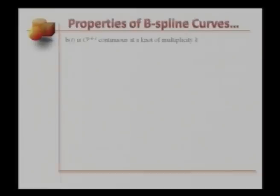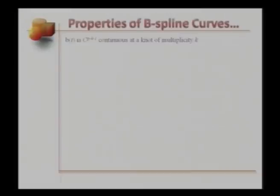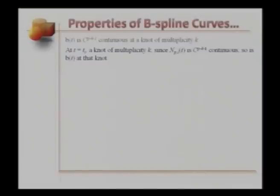A B-spline curve B(t) is C^{p-k-1} continuous at a knot of multiplicity k. This is expected because each individual B-spline basis function exhibits the same property, and since B(t) is a linear combination of those basis functions, it has the same continuity. At t = Tᵢ, a knot of multiplicity k, since N_{p,i}(t) is C^{p-k-1} continuous, so is B(t) at that knot.